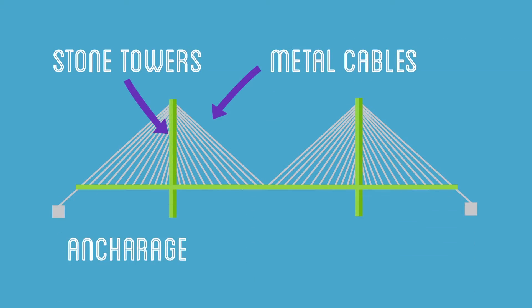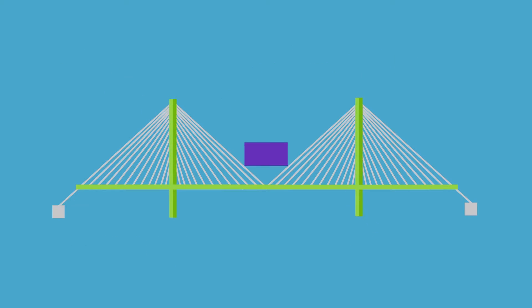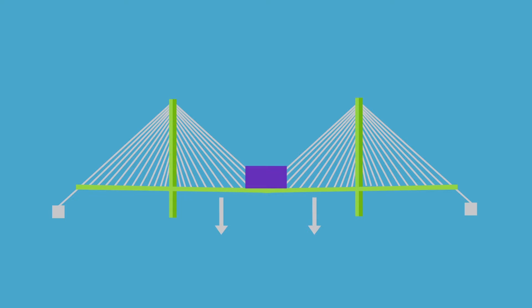Let's look at this in the context of a suspension bridge. When a load is added to the bridge, the bridge is pulled down. This pull puts the cables under great tension.